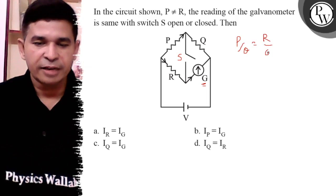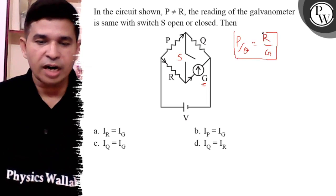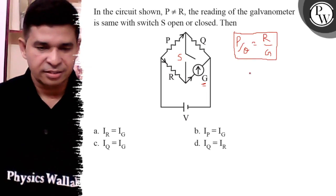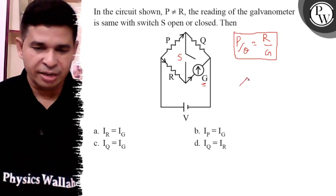Then definitely what happens? There is no current through the switch S, so it can be removed.